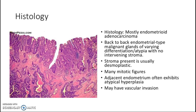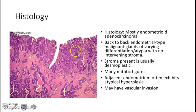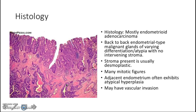Histologically, Type 1 carcinoma is mostly endometrioid adenocarcinoma — it presents as back-to-back endometrial-type malignant glands that have invaded into the underlying stroma, which is desmoplastic. There will be many mitotic figures. Sometimes you can see adjacent endometrium with atypical hyperplasia, and there may be vascular invasion as well.